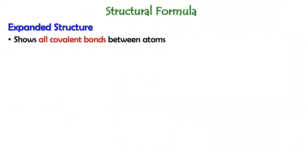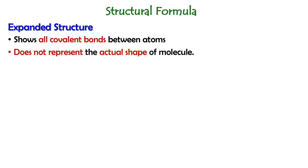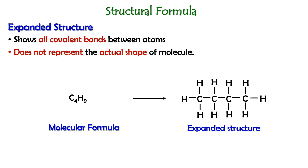The first one is expanded structure. Expanded structure shows all covalent bonds between atoms, but it does not represent the actual shape of the molecule. For example, if we have a molecule with the molecular formula C4H9 and we convert it into an expanded structure, all of the covalent bonds between carbon and hydrogen atoms are shown in this structure.